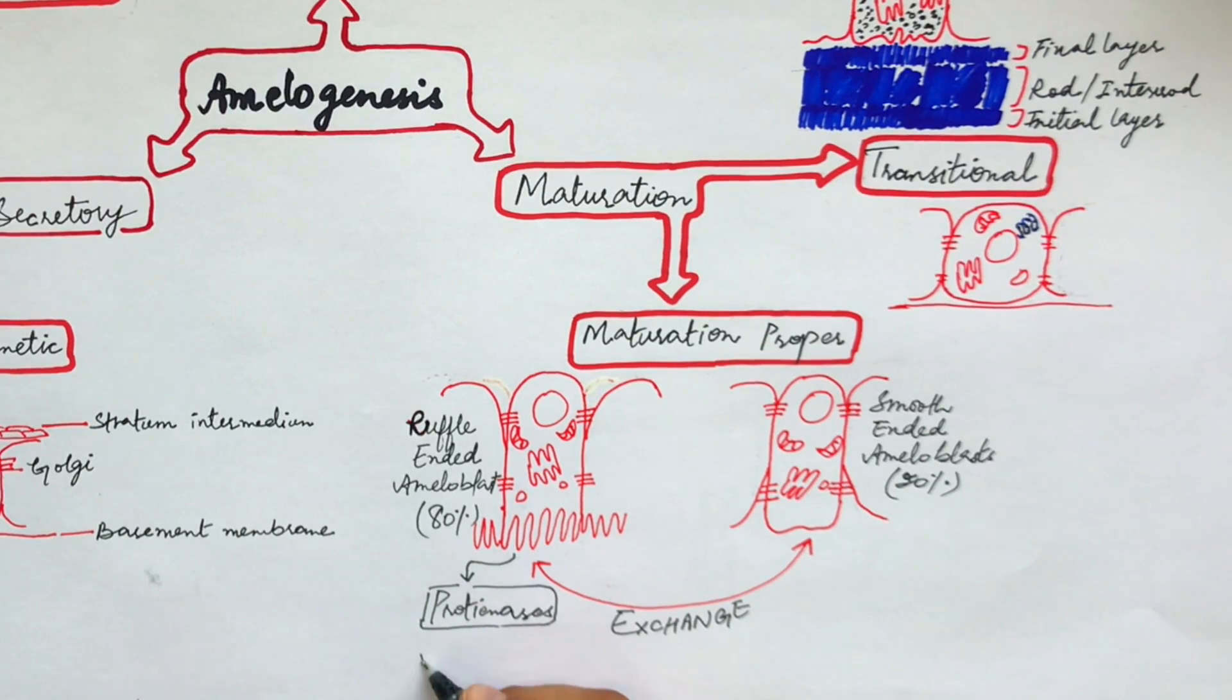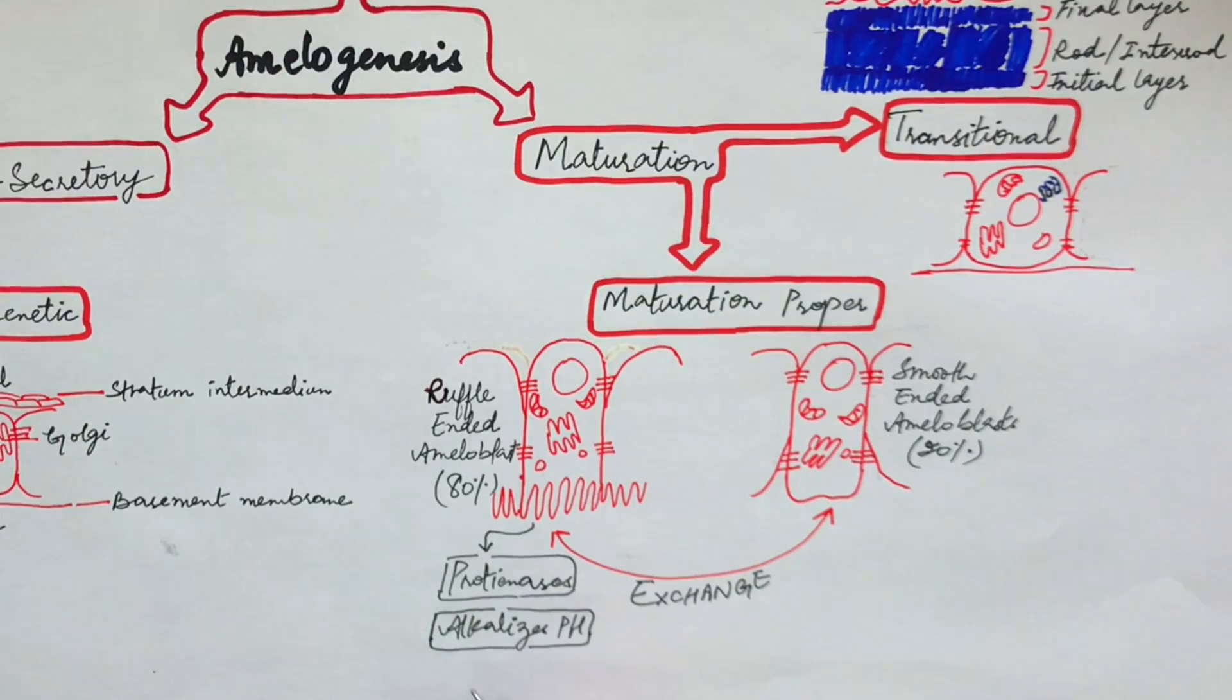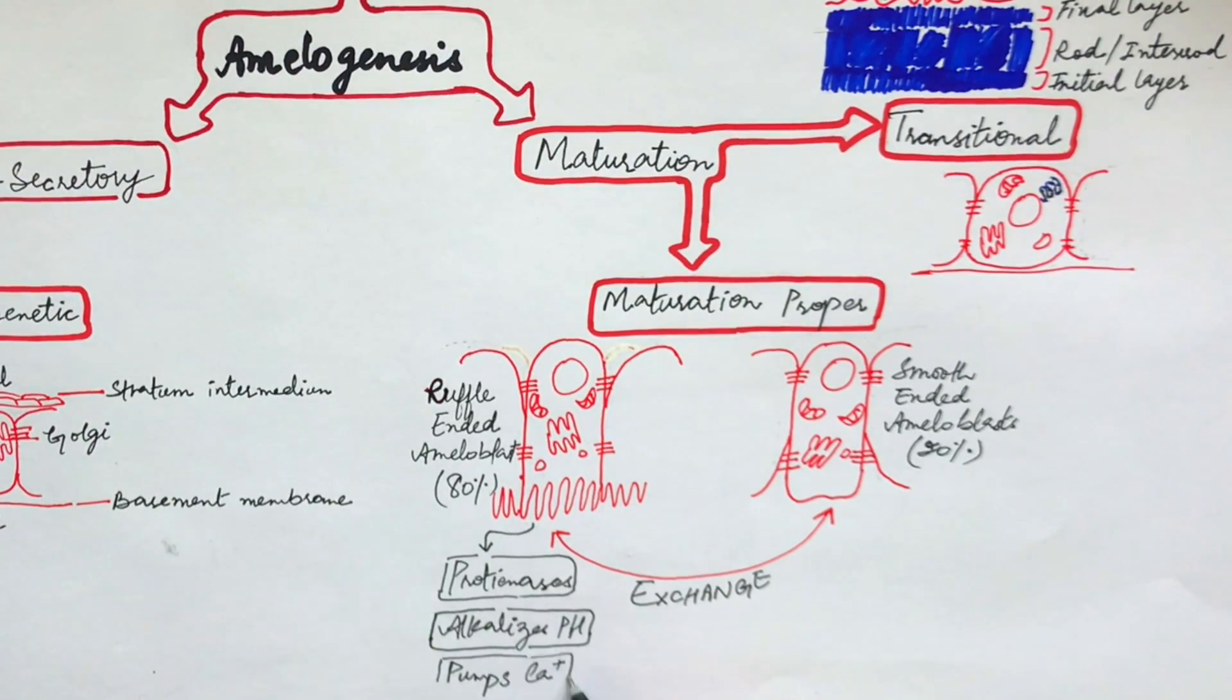The ruffle-ended ameloblasts alkalize the acidic environment created by the degradation of proteins by pumping bicarbonate ions. They also pump calcium ions into the enamel matrix and initiate the process of mineralization.